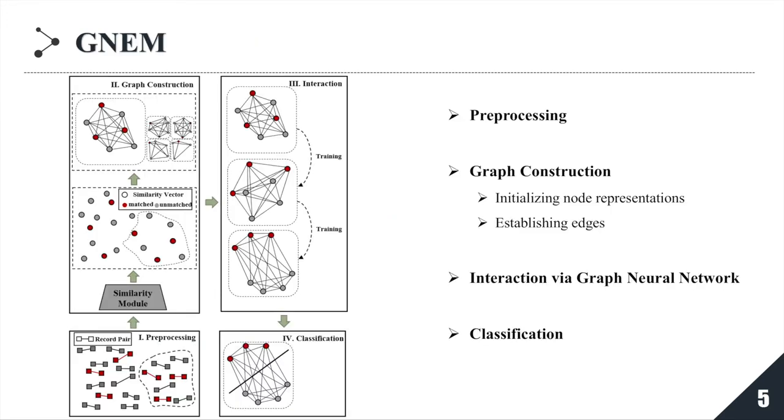To address the limitation in pairwise entity matching models, we propose a new one-to-set neural framework for entity matching named GNEM. GNEM consists of four parts: preprocessing, graph construction, interaction module, and classification module. I will introduce the four modules one by one.